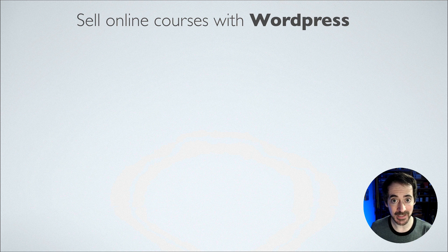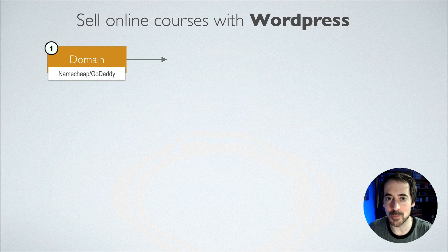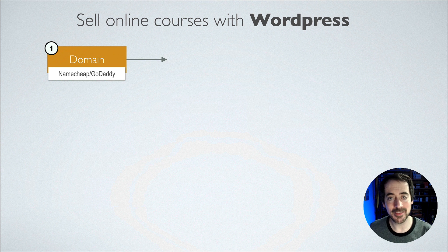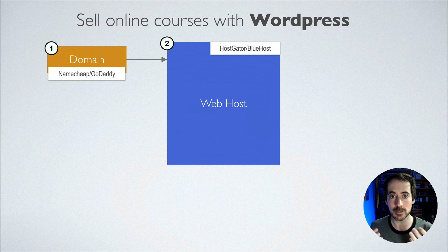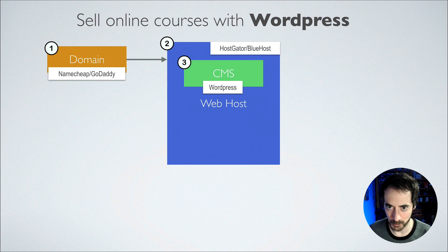The first element is you need to get a domain name — this is the name of your school, your school dot com or dot ca or something. You get that at a company like Namecheap or GoDaddy. Then that domain needs to point to your web host, something like Bluehost or HostGator, where you are going to install WordPress.